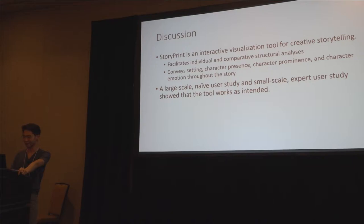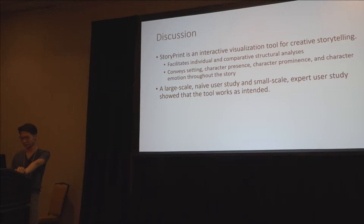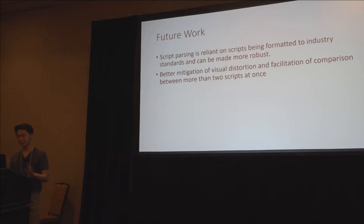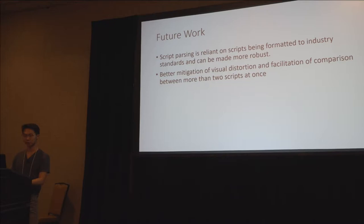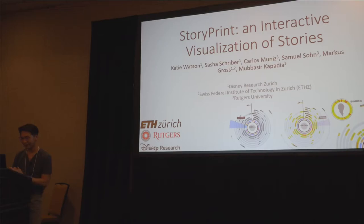StoryPrint is an interactive visualization tool for creative storytelling that facilitates individual and comparative structural analyses. It conveys setting, character presence, character prominence, and character emotion throughout the story. Based on the user studies conducted, we've concluded that towards this end, we have been successful. For future work, we hope to remove the limitation on the parsing end — we are specifically looking at film scripts, and the parsing is very rigid. We would also like to improve robustness, and investigate better ways to mitigate the visual distortion caused by the need to decrease the width of arcs as characters become less prominent.